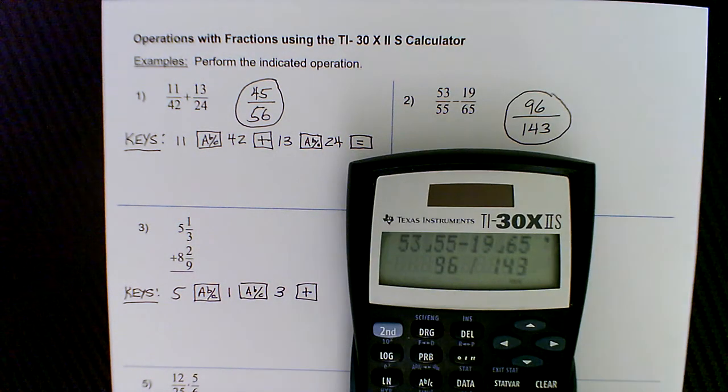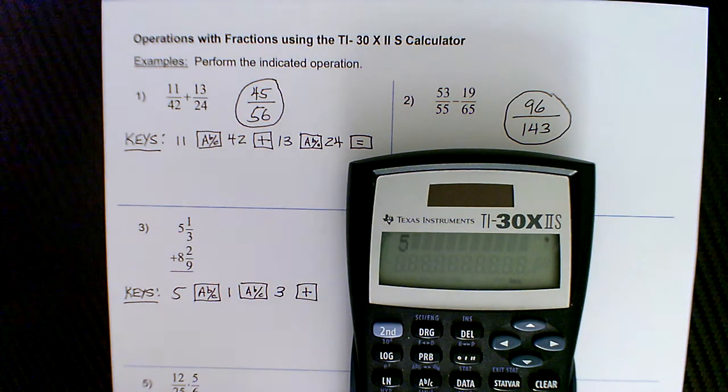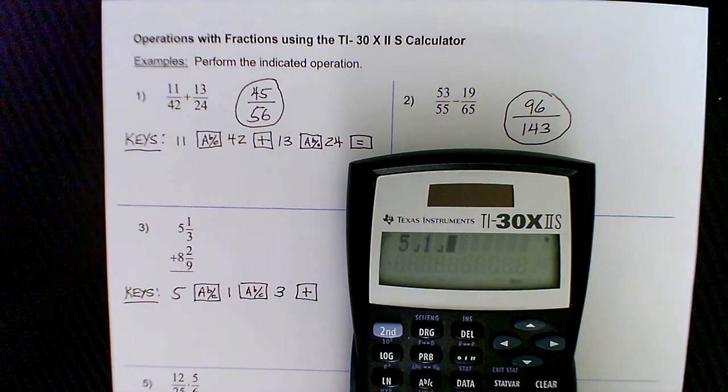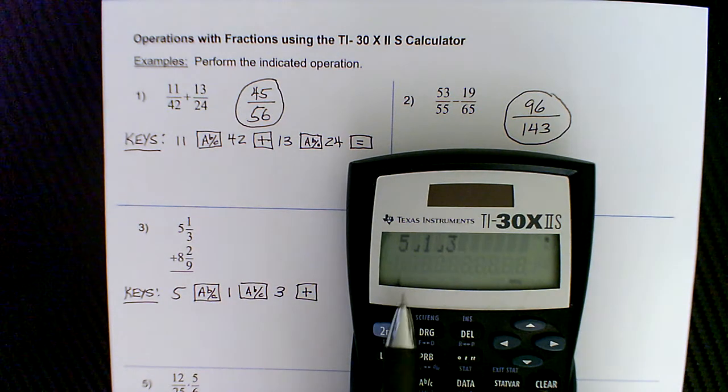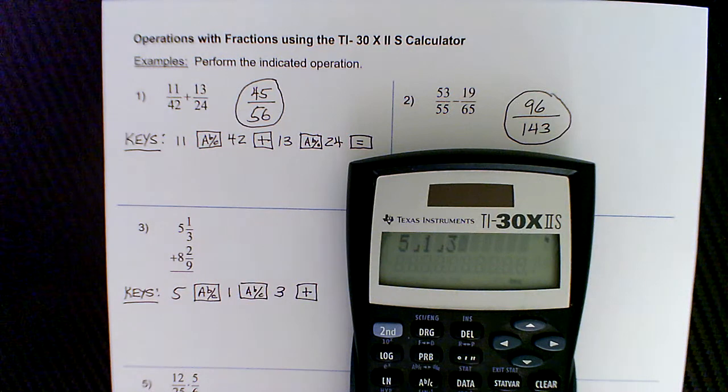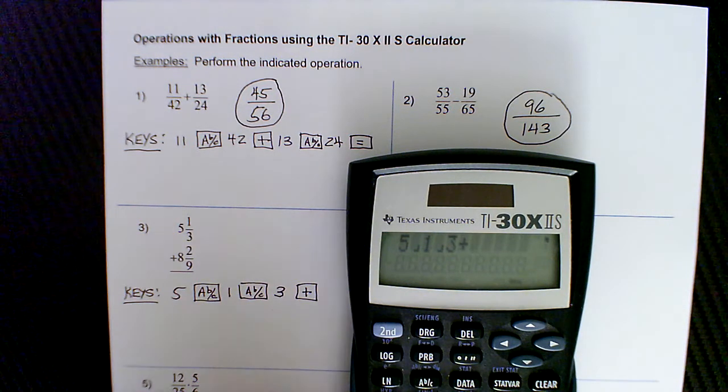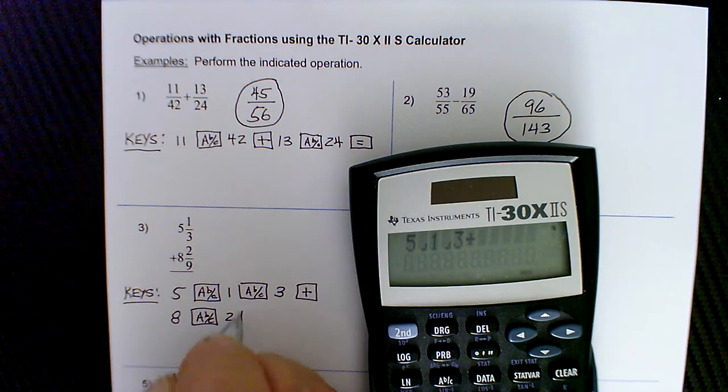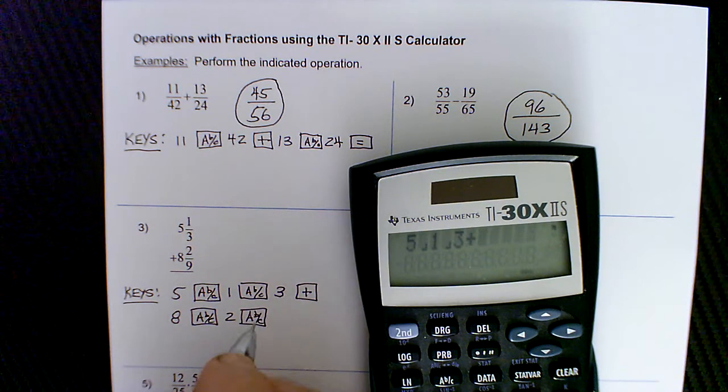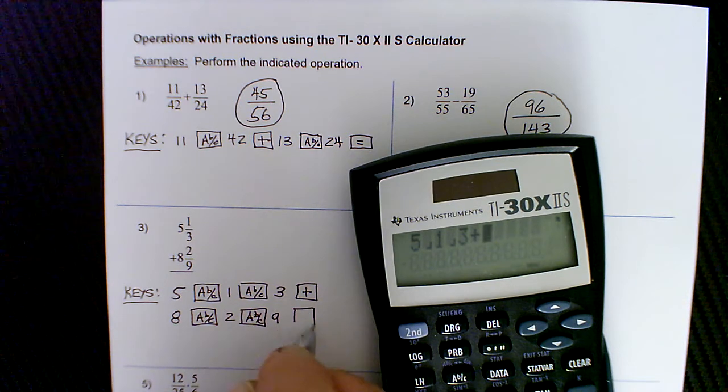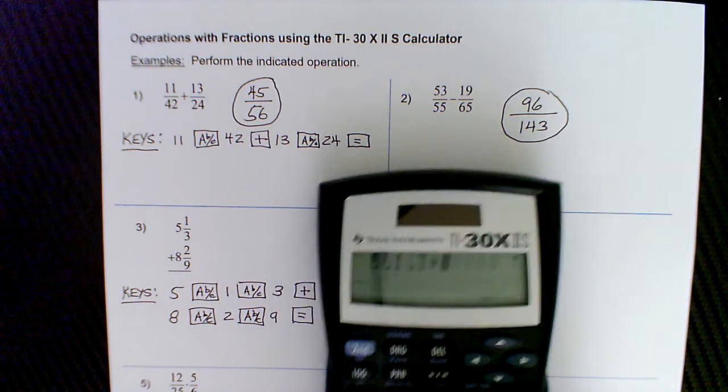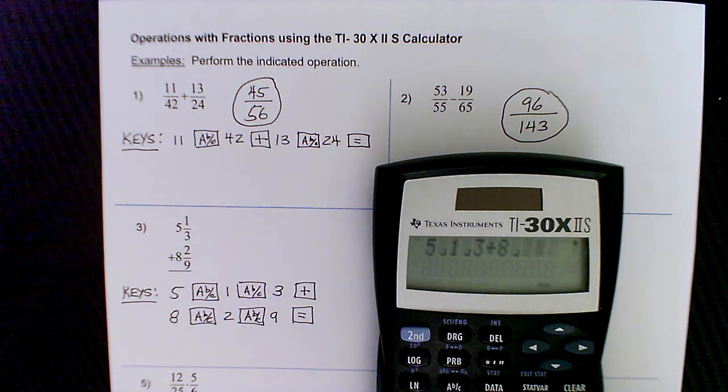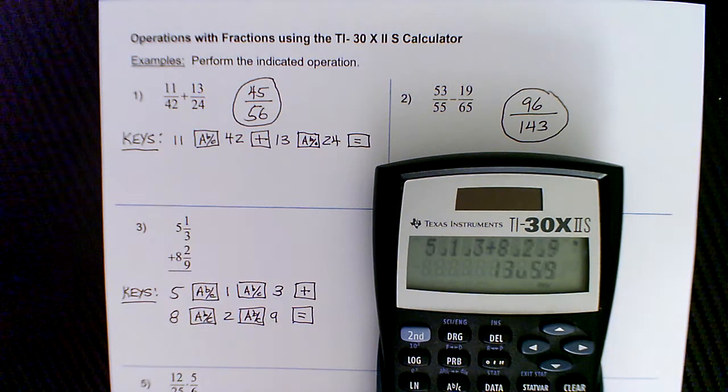So if I type in five, hit the fraction key, one, hit the fraction key, three. Okay, so you have to understand that this is the mixed number, five and one-third. And I'm going to do the same thing after plus. We'll do eight and two-ninths. So eight, fraction key, two, numerator of the fraction, fraction key, nine, denominator of the fraction. And then we'll do equals or enter. And let's see what that looks like now. So we've got the five and one-third plus. So eight, fraction key, two, fraction key, nine, and hit enter.